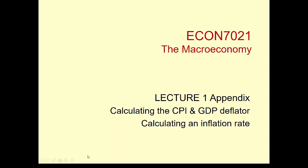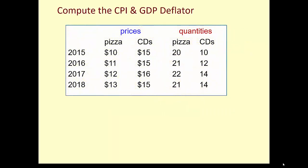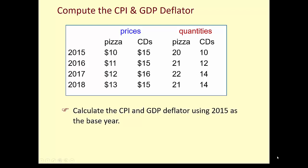This is the example appendix for lecture one. In this video we'll look at how we can calculate the consumer price index, the GDP deflator, and inflation using a couple of simple examples. We'll calculate the CPI and the GDP deflator for all four years, using 2015 as the base year, and then calculate inflation for 2017 using the CPI and 2018 using the GDP deflator.